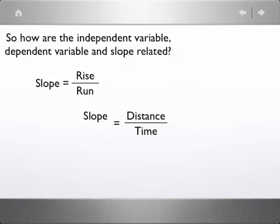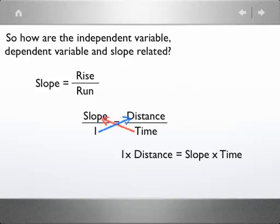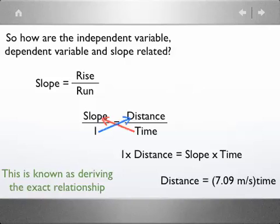Now, we're going to do a mathematical operation known as cross-multiplying. To do that, to make it just a little bit more visually understandable, we put that over 1 and then we cross-multiply. So when I cross-multiply, I multiply slope by time and I multiply distance by 1. So I have 1 times the distance is equal to the slope multiplied by the time. So if I then make another substitution, I'm left with distance is equal to 7.09 meters per second multiplied by the time.